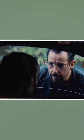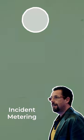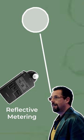It can be used to assess the illumination of a specific part of a frame, such as an area with highlights or an area with shadows. So incident metering measures the light before it hits the subject, while reflective metering measures light after it hits the subject.